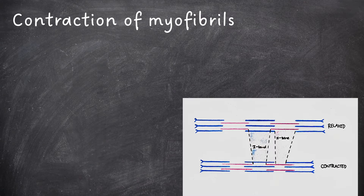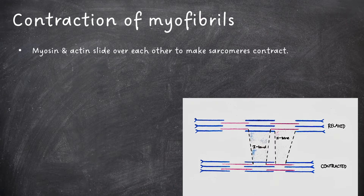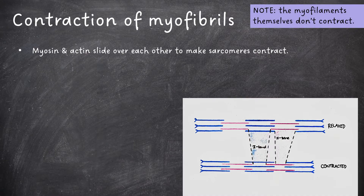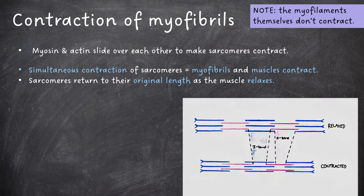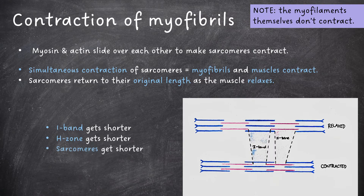So, how do myofibrils contract? This is possible because myosin and actin myofilaments slide over each other to make sarcomeres contract. Note that myofilaments themselves do not contract. The simultaneous contraction of sarcomeres allows myofibrils and muscles to contract. The sarcomeres return to their original length as the muscle relaxes. In a contraction, the I-band gets shorter, the H-zone gets shorter, the sarcomere gets shorter, and the A-band stays the same.